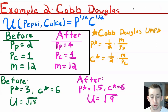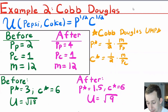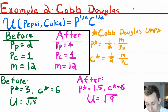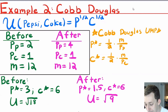For the last example, let's use Cobb-Douglas utility. The utility function is Pepsi^(1/2) times Coke^(1/2). Before the price change, Pepsi is $2, Coke is $1, and we have $12. After, Pepsi is $4 and Coke is $1, still with $12. Using the Cobb-Douglas shortcut, the optimal Pepsi is (1/2) × M / price of Pepsi, and optimal Coke is (1/2) × M / price of Coke.